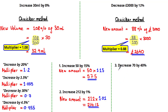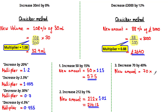Next, decrease 70 by 40%. Because we are decreasing, we take 60% of 70 — found by doing 100% minus 40%. The new amount is 70 multiplied by the multiplier 0.6, which is the decimal value of 60%.